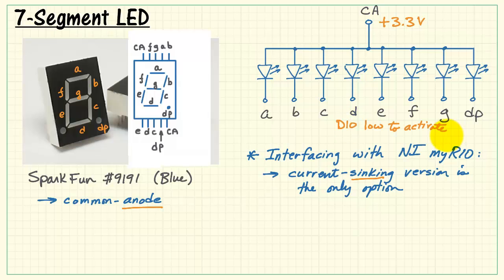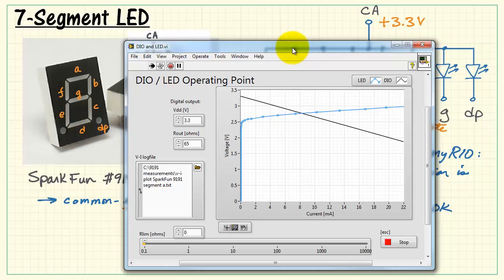Now as you consider the state of the digital output, we need it to be low in order to activate the device. That applies a voltage across the diode and current flows. Turns out that a direct connection to MyRio is okay for this device.